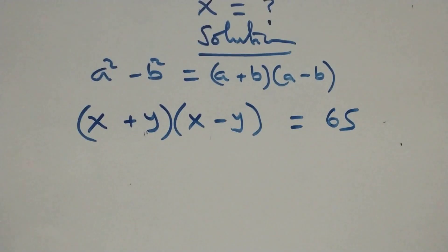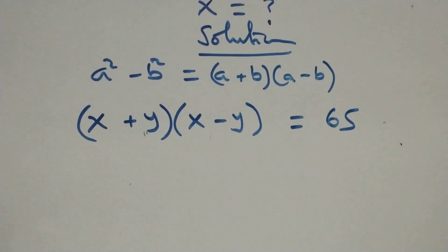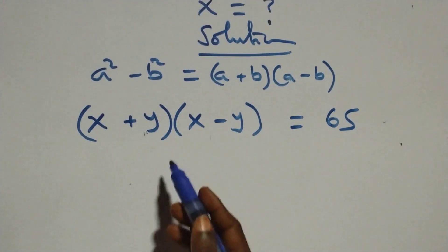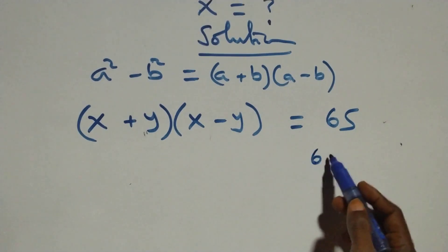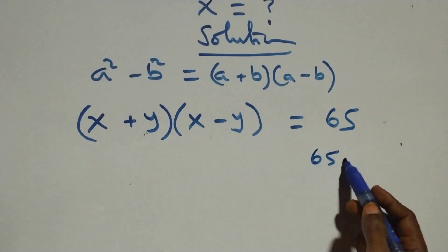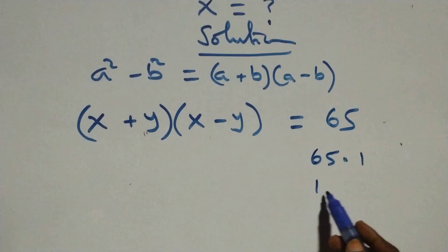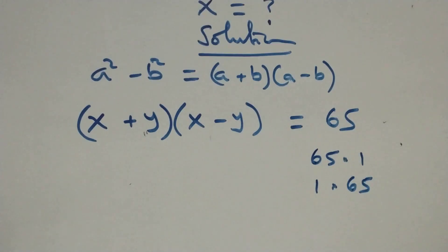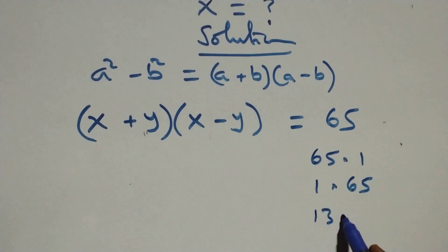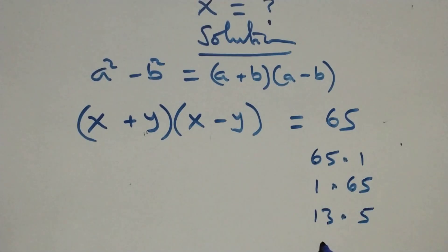We can break 65 into two factors. We have 65 times 1, or 1 times 65, or 13 times 5, or 5 times 13.